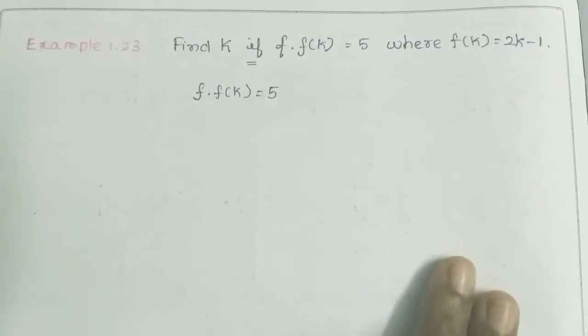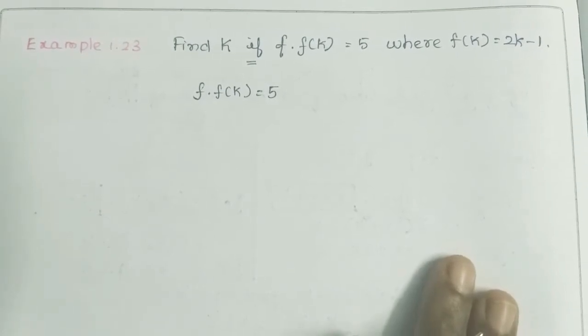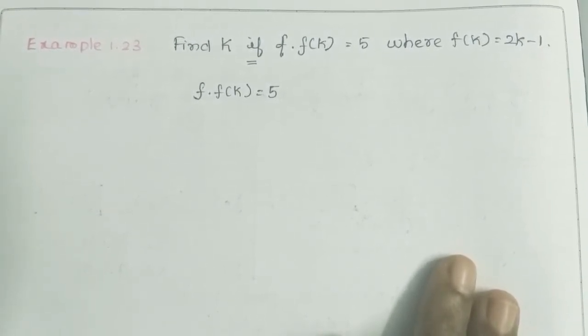Students, in the video example 1.23: Find k if f(f(k)) is equal to 5, where f(k) is equal to 2k minus 1.